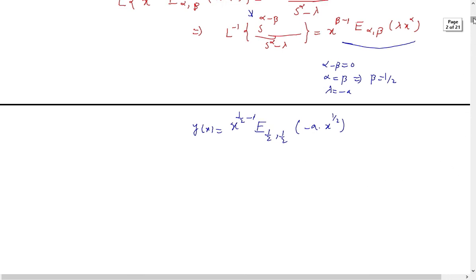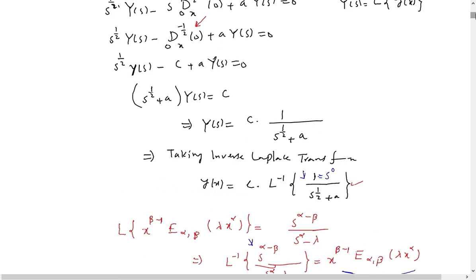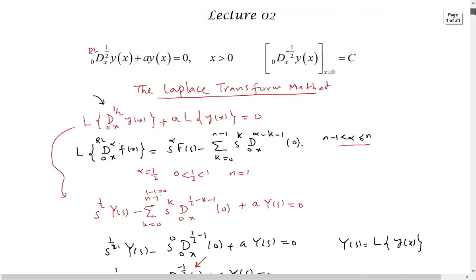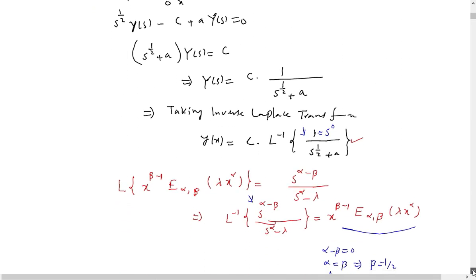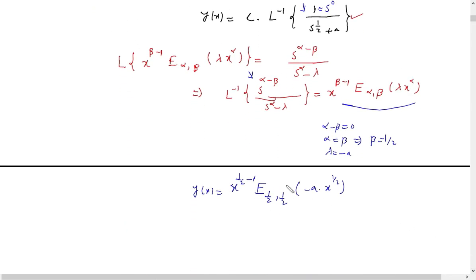This is very simple — by using the Laplace transform method you can see how simply we solved this differential equation. Here we had alpha equal to one-half, but we can take alpha as anything and solve this equation in the general case using the same formulas. In the next lecture I will solve the general case of this differential equation by the same method. If you have any questions, you can ask in the comments. If you like the video, please subscribe. Thank you for watching.